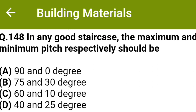In any good staircase the maximum and minimum pitch respectively should be: option A 90 and 0 degrees, option B 75 and 30 degrees, option C 60 and 10 degrees, option D 40 and 25 degrees. The correct answer is option D, 40 and 25 degrees.